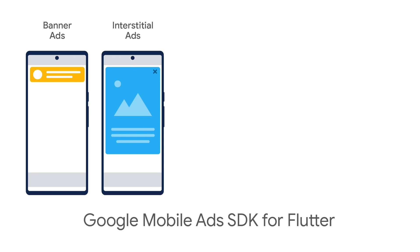Interstitial ads are full-screen ads that cover the whole screen of your app. These ads work great when you place them at natural breaks and transitions in your app — for example, after the user completes a level in a game.